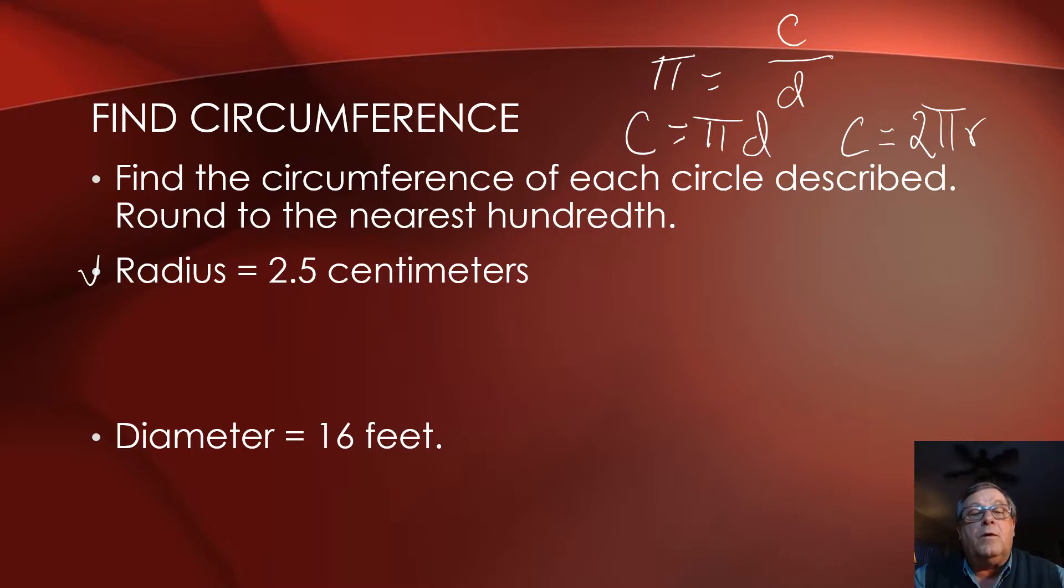In this first problem, we're given that the radius is 2.5 centimeters. We set our formula up: the circumference is equal to 2π times the radius, which is 2.5 centimeters.